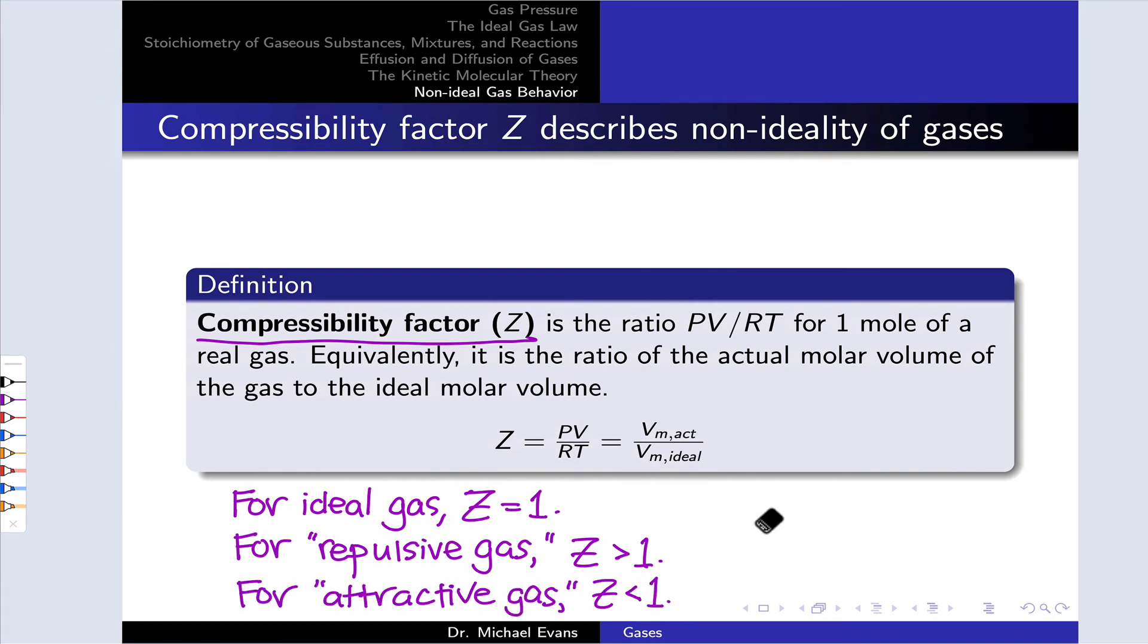When Z is less than 1, we can think of the gas as attractive. The particles are not taking up as much volume as would be expected based on the ideal gas model, and this is because the particles are pulling themselves toward one another through attractive interactions, attractive intermolecular forces.